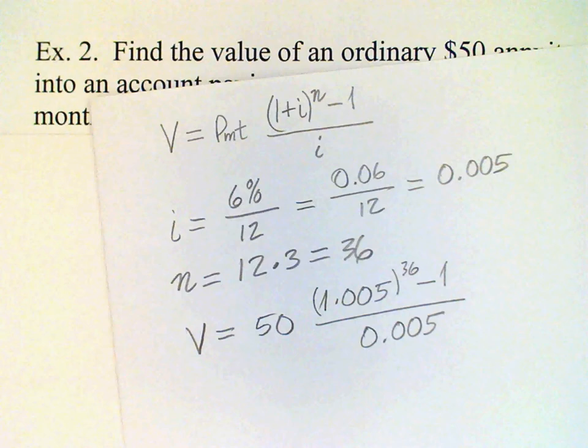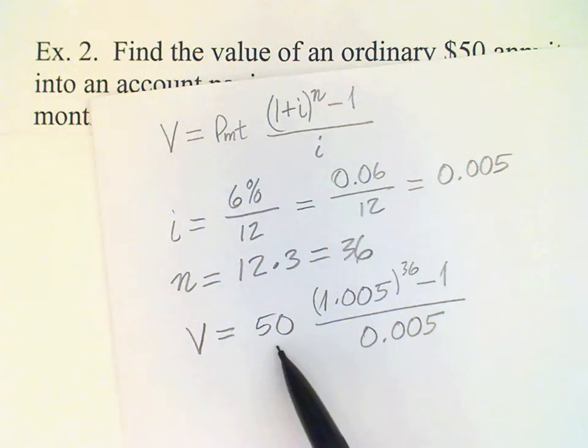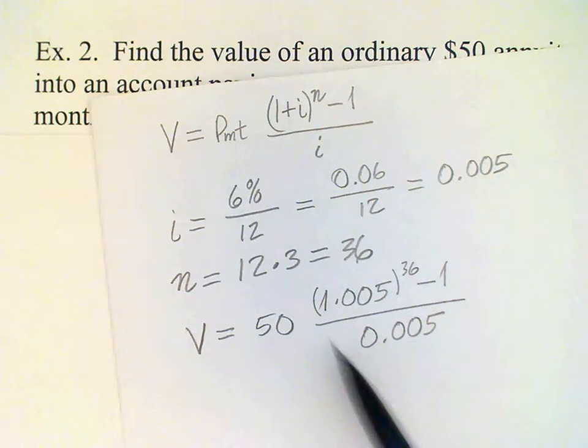And even though the payment is given first in the formula, I think it's easier if you calculate the annuity factor first and then multiply by the payment.